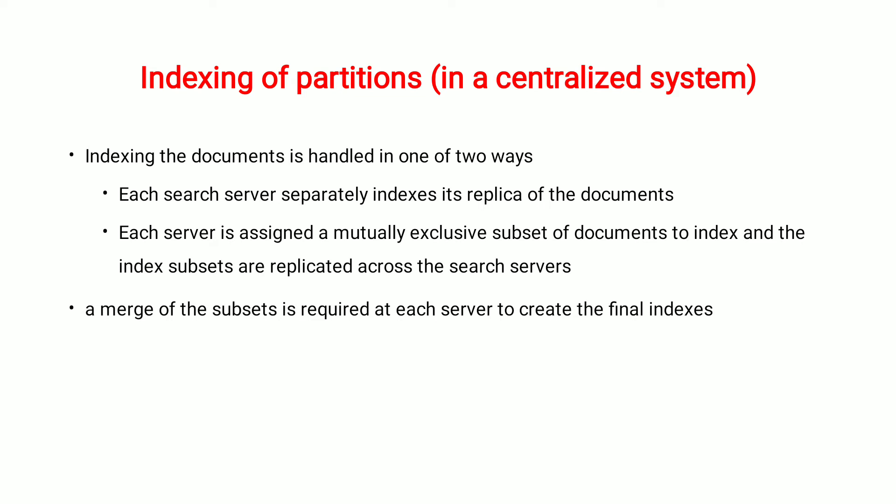In a centralized system, indexing the documents is handled in one of two ways. First, each search server separately indexes its replica of the documents. Second, each server is assigned a mutually exclusive subset of documents to index, and the index subsets are replicated across such servers, with a merge of the subsets required at each server to create the final index.